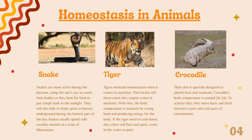Next is Tiger. Tigers maintain homeostasis when it comes to nutrition. Their brain tells them when they require water or nutrients. The body temperature is maintained by eating food and producing energy for the body. If the tiger needs to cool down, they often will find cool spots, swim in the water, or pant.